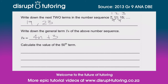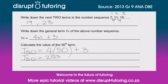So how do we represent this? We're looking for the 50th term, so we represent that as T₅₀. T₅₀ equals 4 times 50 — because n is 50 — plus 3. So our 50th term equals 4 times 50, which is 200, plus 3, giving us 203.